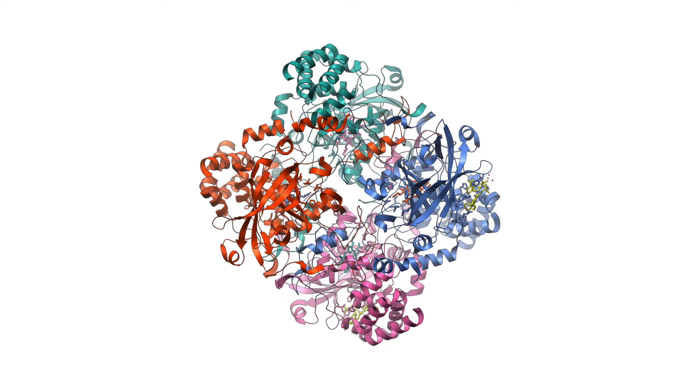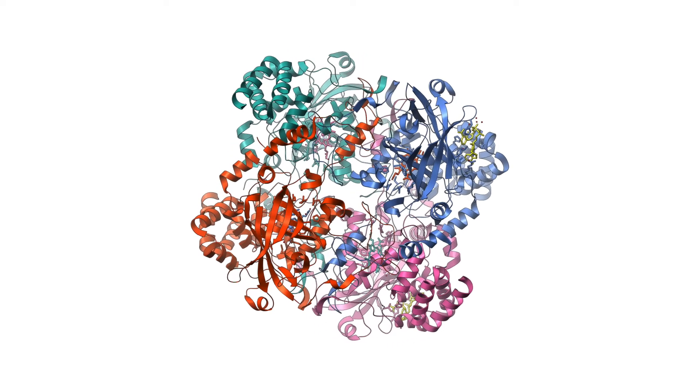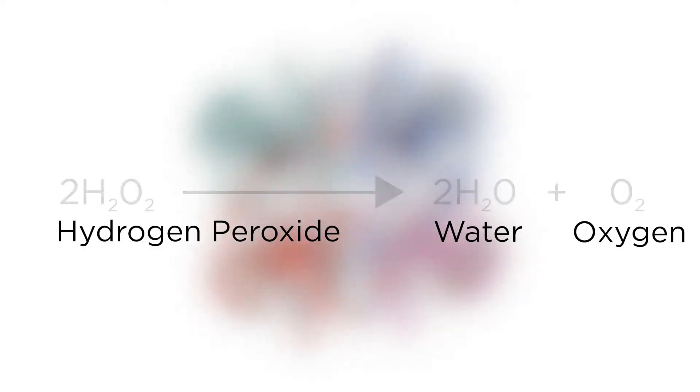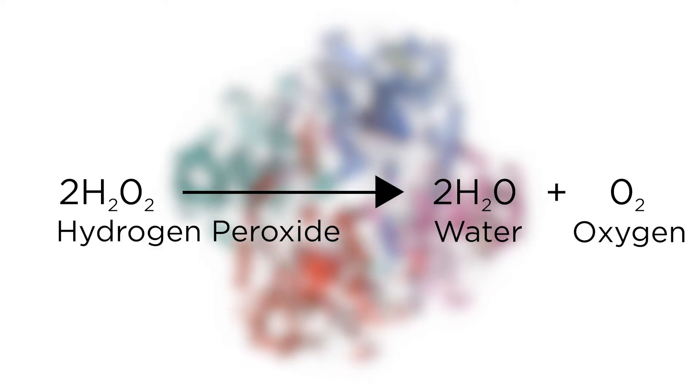The easiest way to differentiate between Staphylococcus and Streptococcus is the catalase test. Staphylococci are catalase positive, whereas Streptococci are catalase negative. Catalase is an enzyme used by bacteria to induce the reduction of hydrogen peroxide into water and oxygen.